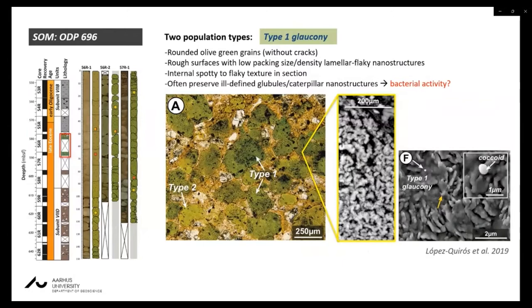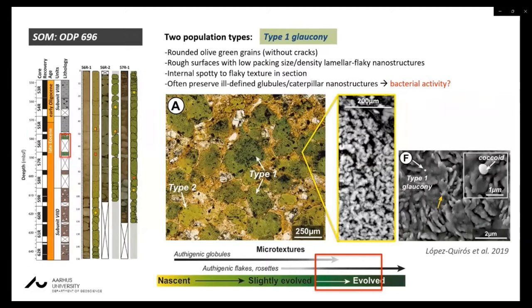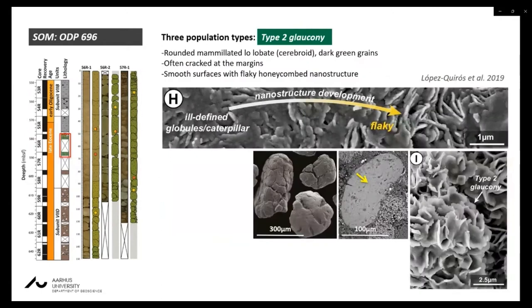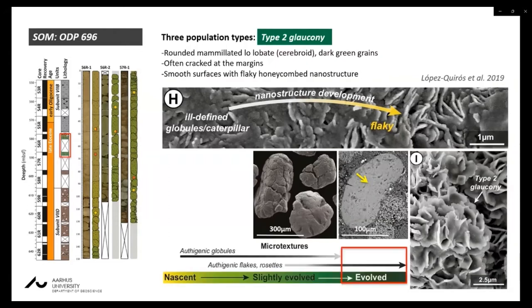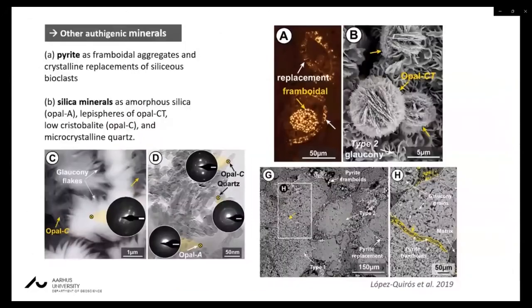Two population types of glaucony grains were observed in ODP 696. Type 1 is characterized by rounded grains without cracks, with raw surfaces with flaky nanostructures, and often preserves ill-defined globules and caterpillar nanostructures resembling bacterial activity — classified as evolved grains. Type 2 is characterized by rounded, cervioid, dark green grains, often crooked at the margins, with smooth surfaces and flaky honeycomb nanostructures, showing a slightly more evolved shape than Type 1. Other authigenic minerals such as pyrite and silica minerals (amorphous silica, opal-CT, or microcrystalline quartz) were found closely related to the glaucony grain formation process.